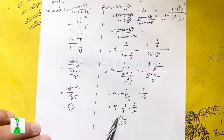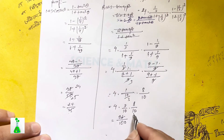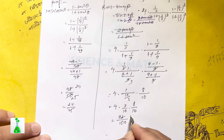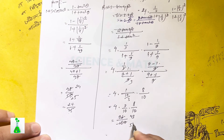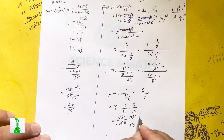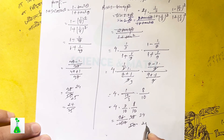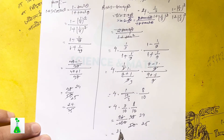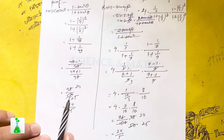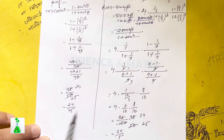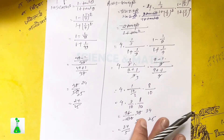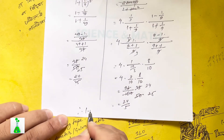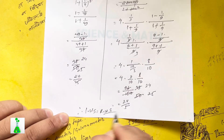Multiplying out: 4 times 3 is 12, times 8 is 96, divided by 100. Simplifying by 2 gives 48 by 50, and dividing by 2 again gives 24 by 25. So sin 4 beta equals 24 by 25. Therefore LHS equals RHS, hence proved.